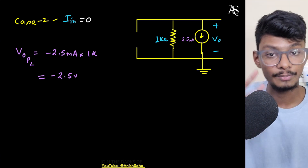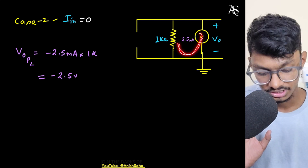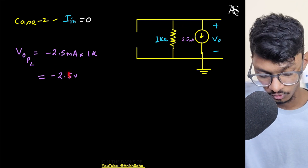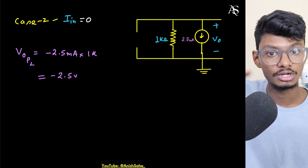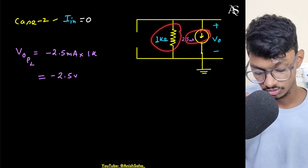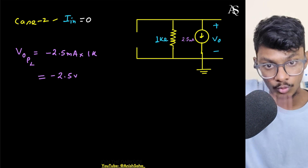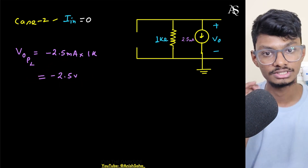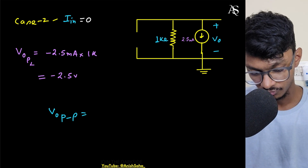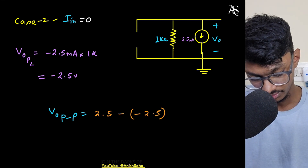After this, the inductor discharges. As it discharges, the current reduces toward zero, so the voltage also moves toward zero — it cannot go more negative than −2.5 V. This is the most negative possible value of the output voltage. Therefore, peak-to-peak output voltage = 2.5 − (−2.5) = 5 volts.